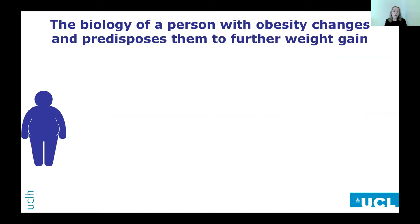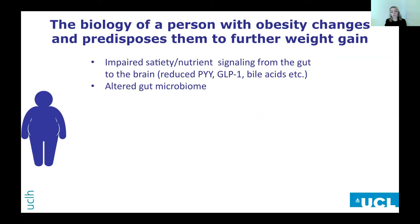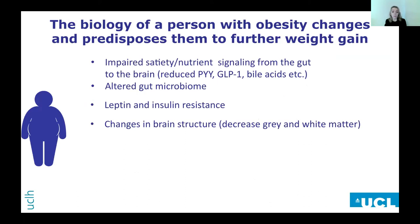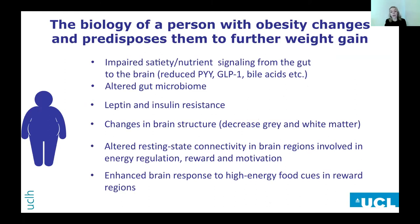We also know that when a person develops obesity, their biology changes. The signalling from the gut is impaired, they have an altered gut microbiome, they develop leptin and insulin resistance, there's a change in brain structure, a change in connectivity within the brain, and an enhanced brain response to food cues. These factors all drive increased energy intake.